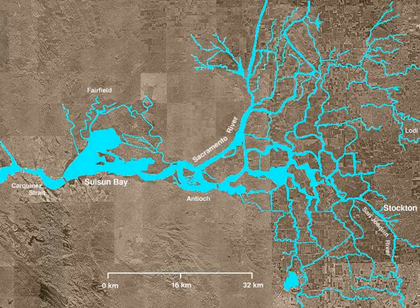Much of the water supply for central and southern California is also derived from here via pumps located at the southern end of the delta, which deliver water for irrigation in the San Joaquin Valley and municipal water supply for southern California.